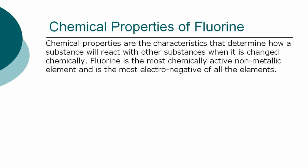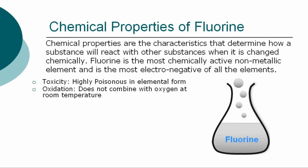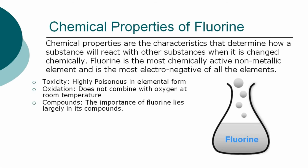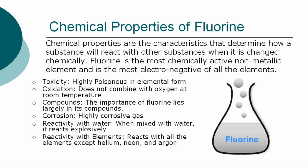The chemical properties are the characteristics that determine how fluorine will react with other substances when it is changed chemically. The chemical properties of fluorine are: toxicity — highly poisonous in its elemental form. Oxidation — does not combine with oxygen at room temperature. Compounds — the importance of fluorine lies largely in its compounds. Fluorine is a highly corrosive gas. When mixed with water, it reacts explosively. It reacts with all the elements except helium, neon, and argon. It is heat resistant and flammable.